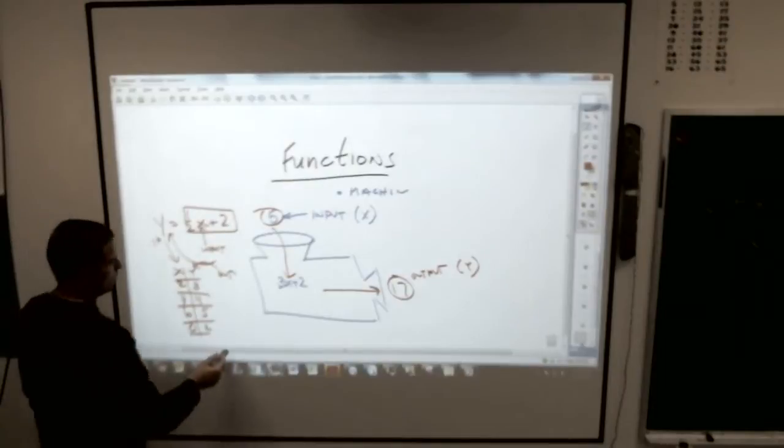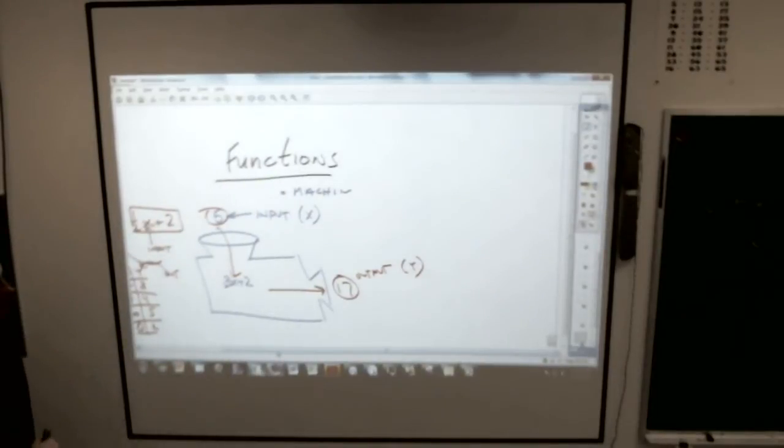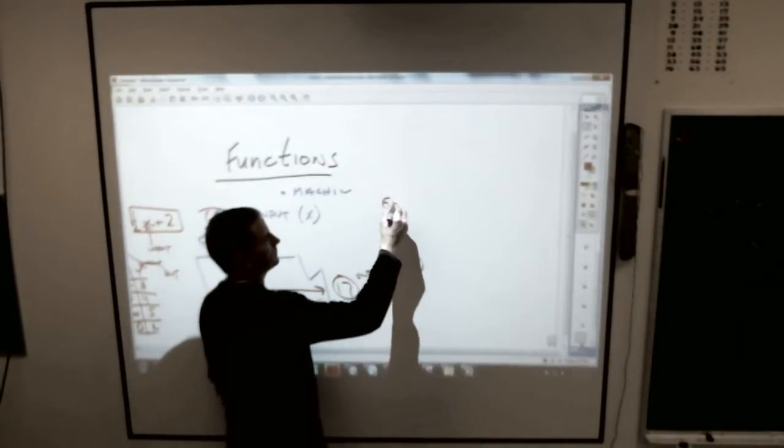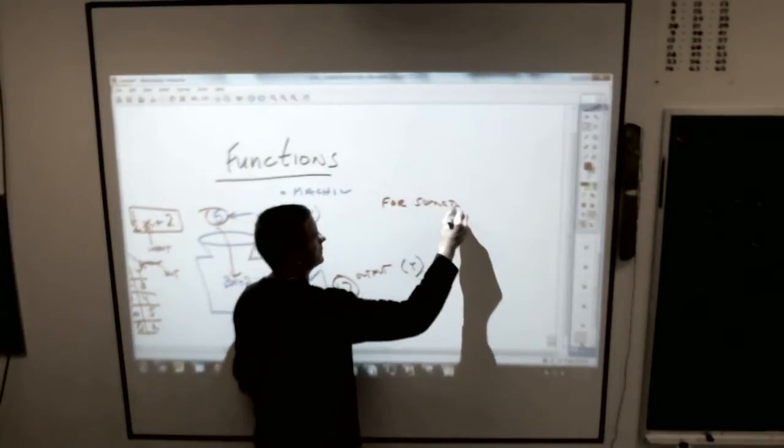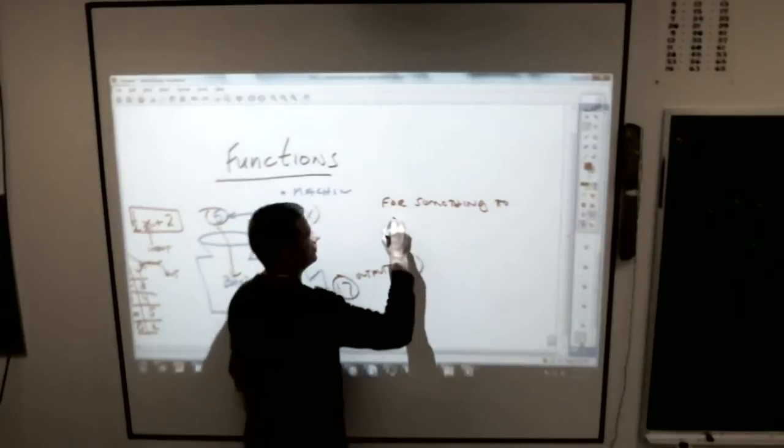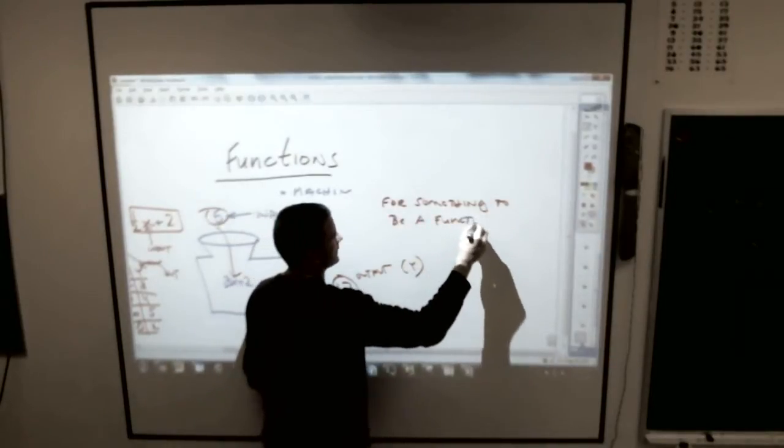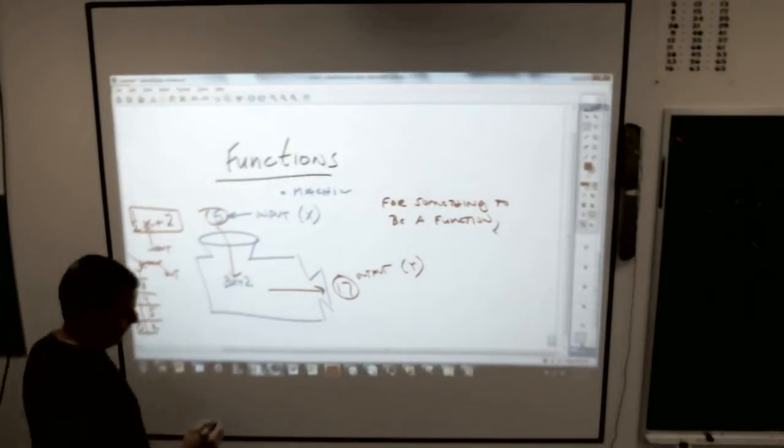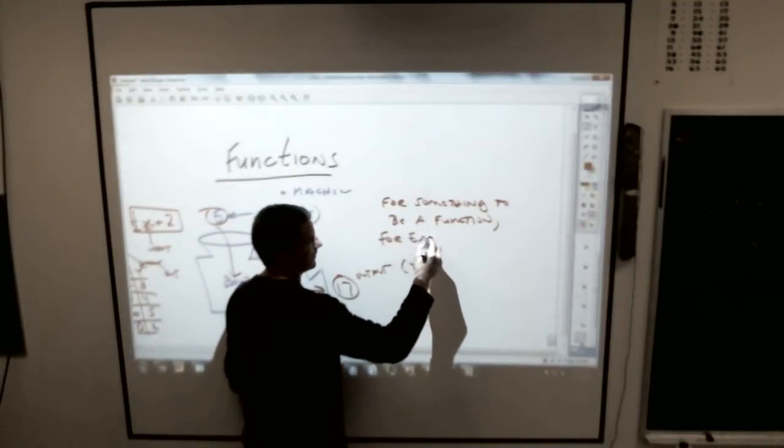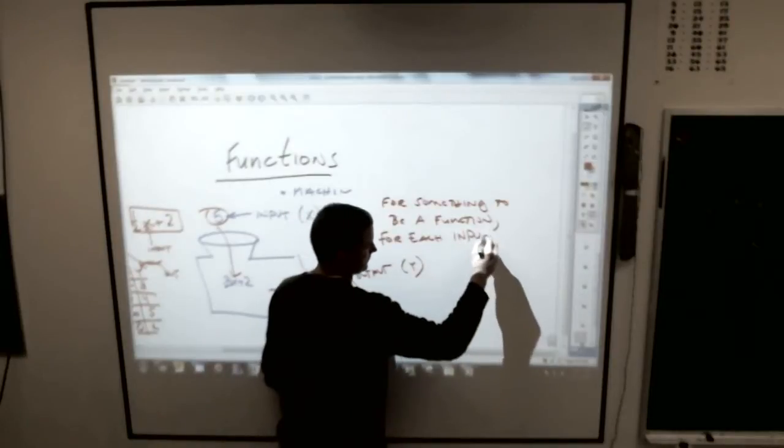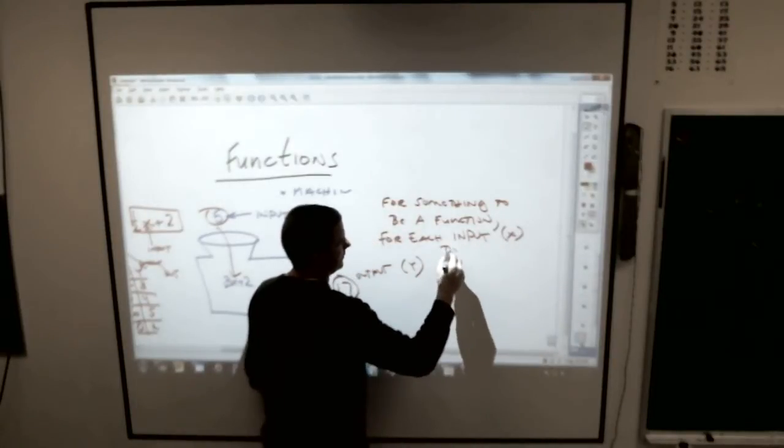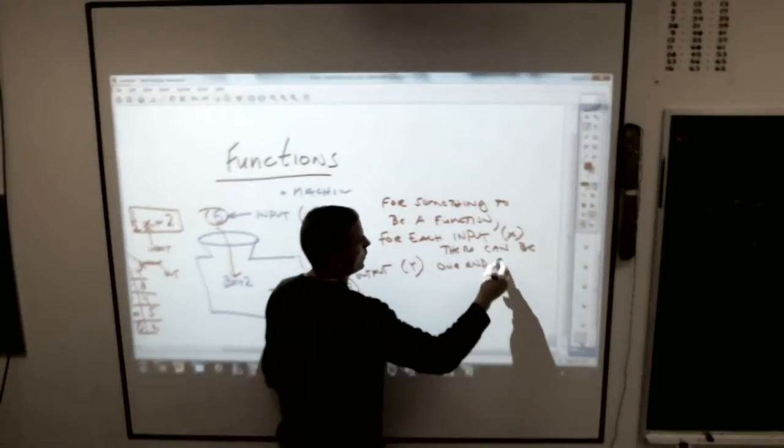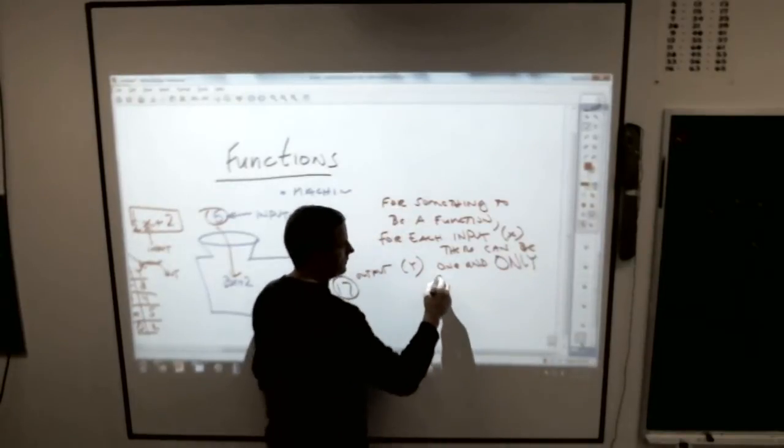Now, the one thing you have to remember with functions, and this won't make any sense to you at all today, but someday you'll come back and say oh yes. For something to be a function, for each input number, which we think of as our x number, there can be one and only one output number.